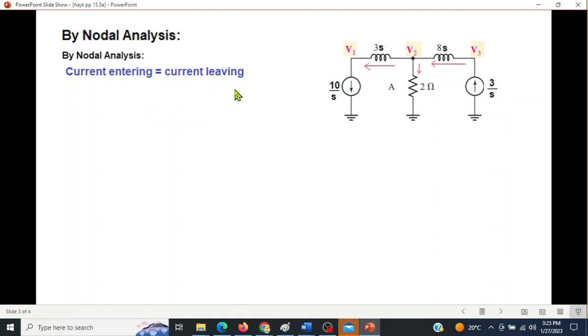The only part we have to remember at every node is that the current entering must be equal to current leaving. So first of all, at this node, I have drawn the current directions myself. This is entering current. Current entering is V2 minus V1 divided by 3S.